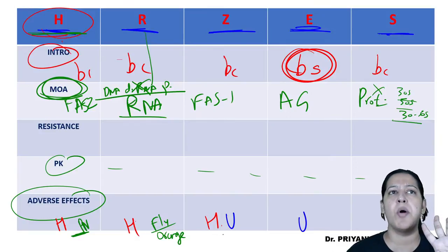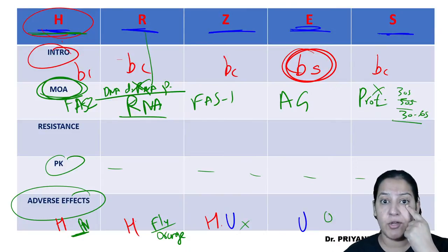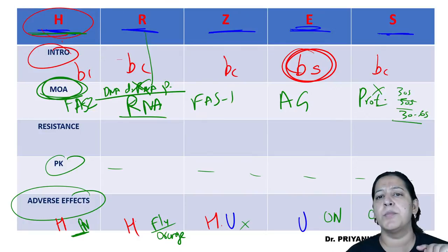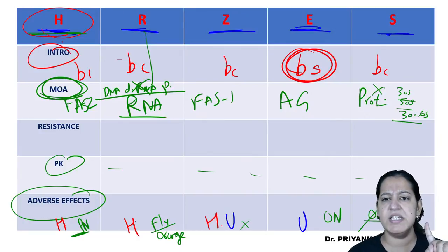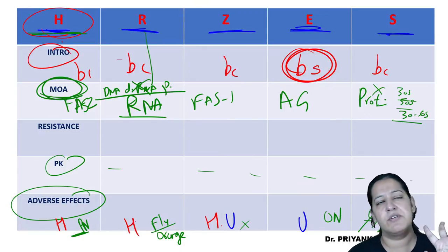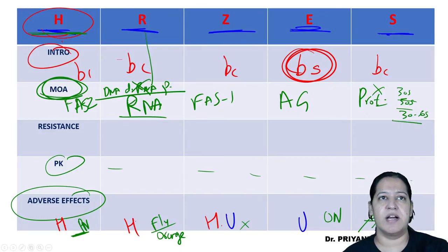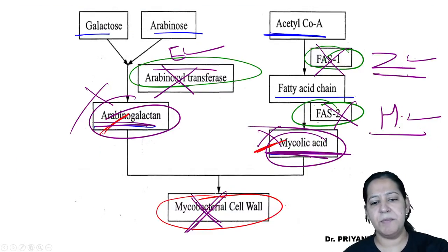Ethambutol causes optic neuritis and color/brightness disturbance. Streptomycin's mnemonic is 'ON': ototoxicity, neurotoxicity, and nephrotoxicity. These were the adverse effects we have already covered.